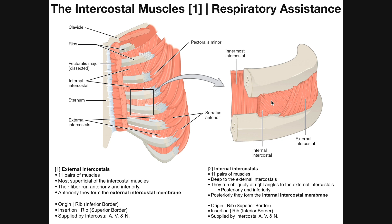The internal intercostals have the opposite action from the external intercostals. Their origin is the superior border of the rib below, and their insertion is the inferior border of the rib above. So the rib above is pulled down toward the rib below. If you consider the action of all 11 pairs of these muscles, the net effect is rib depression — the ribs moving downward — which means the internal intercostals are more important for exhalation.